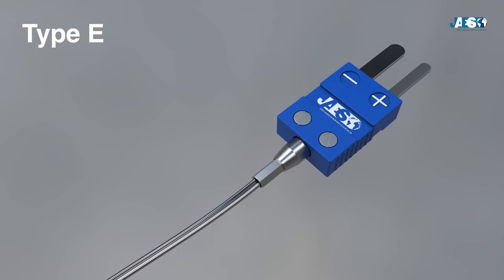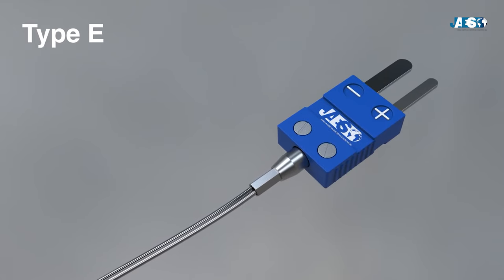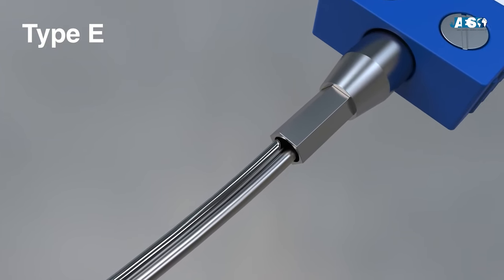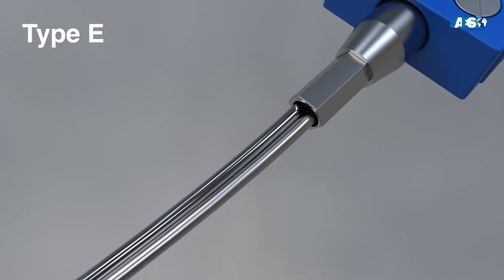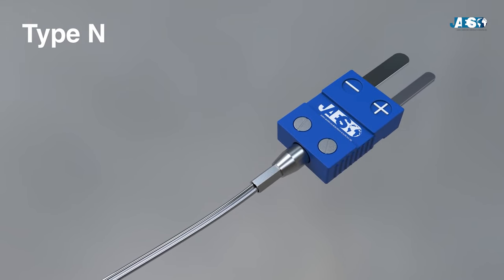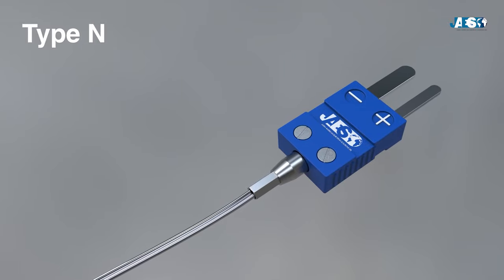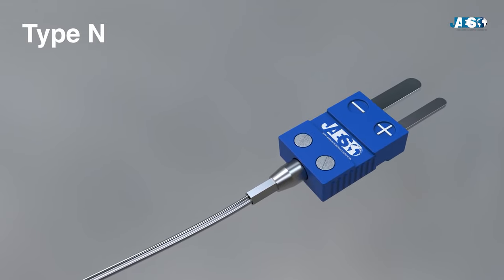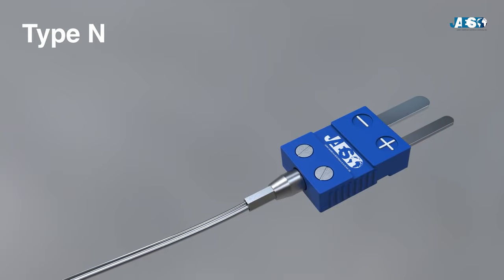Model E, composed of Chromel and Constantan, is suitable for perceiving low temperatures because it is very sensitive. Type N, composed of Nicrosil and Nisil, measures the interval between 650 degrees Celsius and 1,250 degrees Celsius.